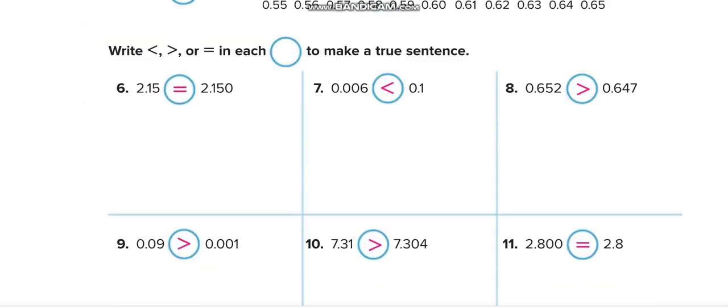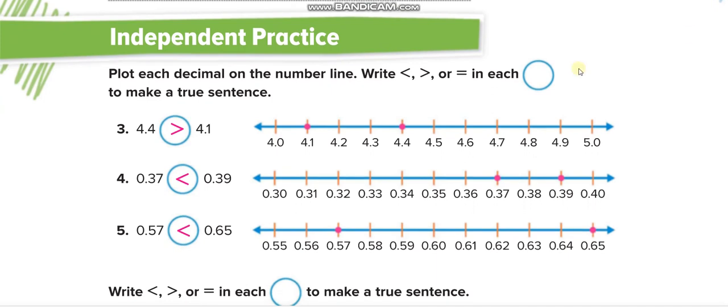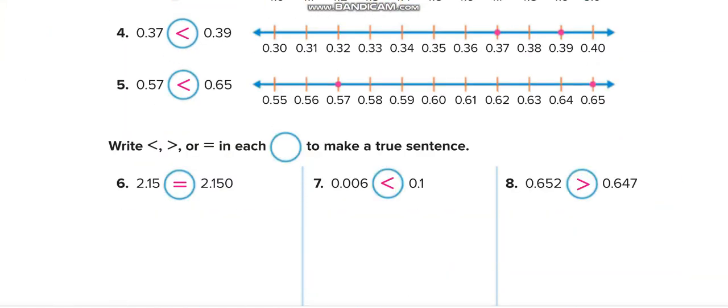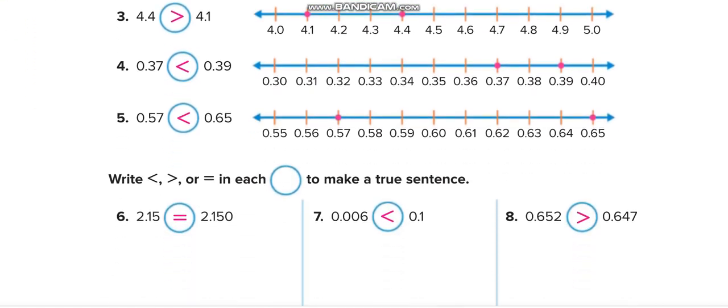Let us move to the next page. There's independent practice. I will solve one or two questions for you guys, and remaining all you have to solve by yourself and match your answers from this video. The first one: 4.4. So ones and ones, 4, same; 4 and 1, so 4.4 is greater. All of them you have to solve and match your answers from this video.